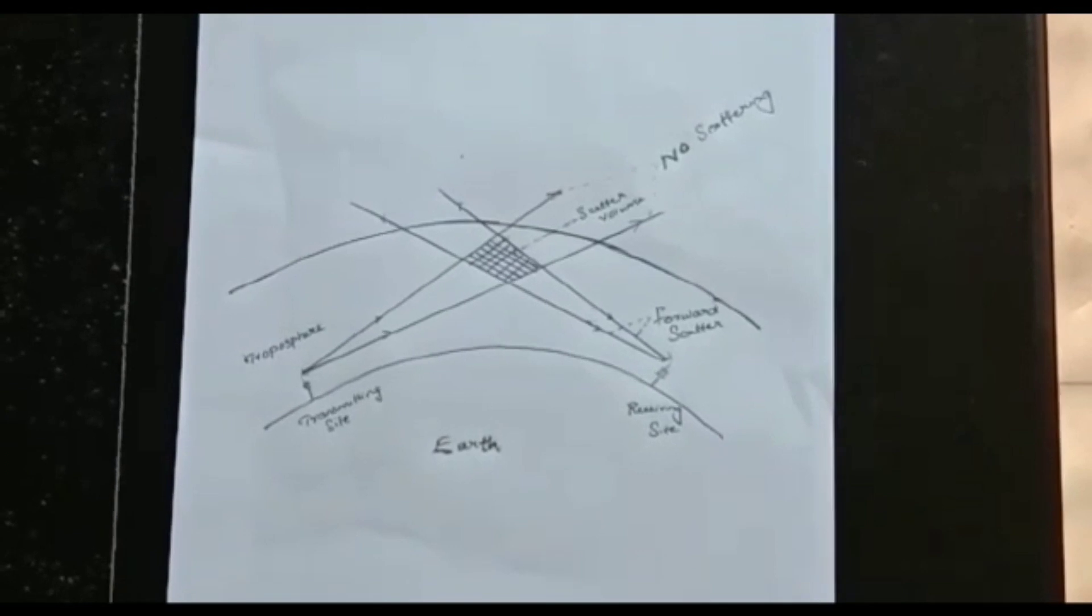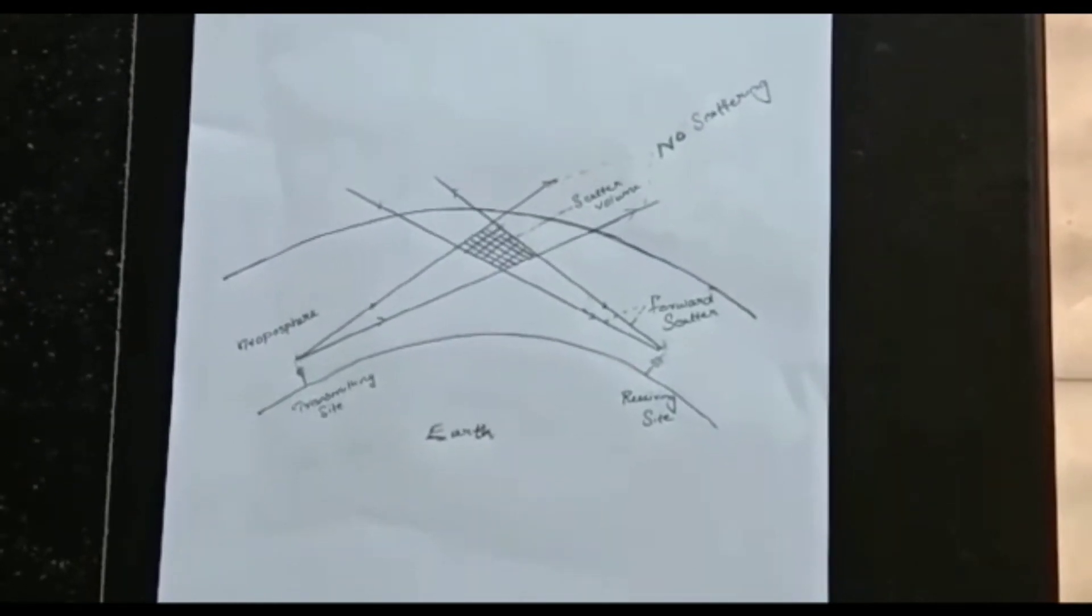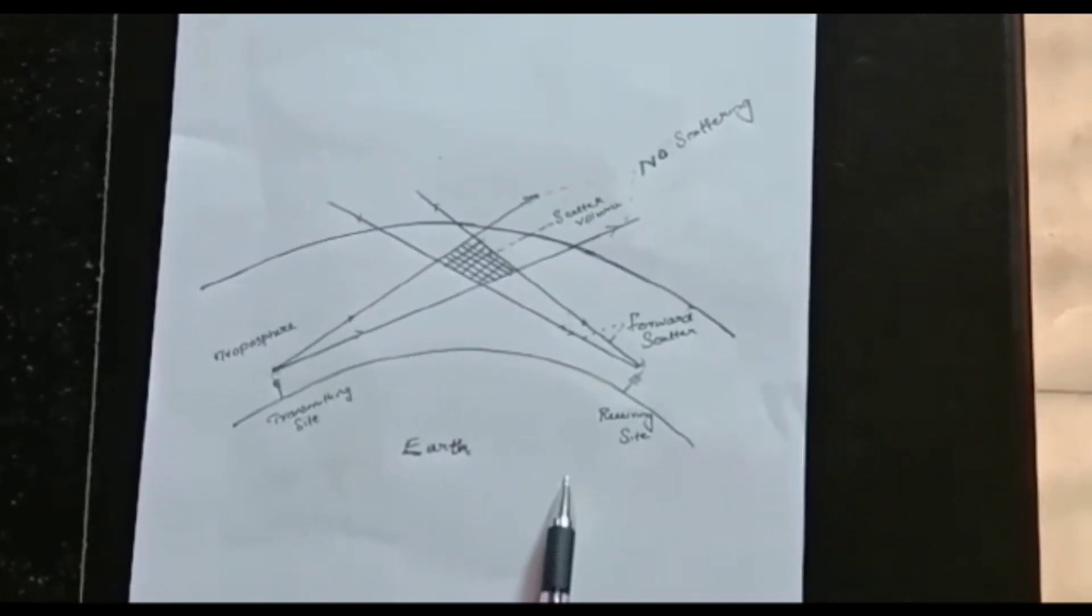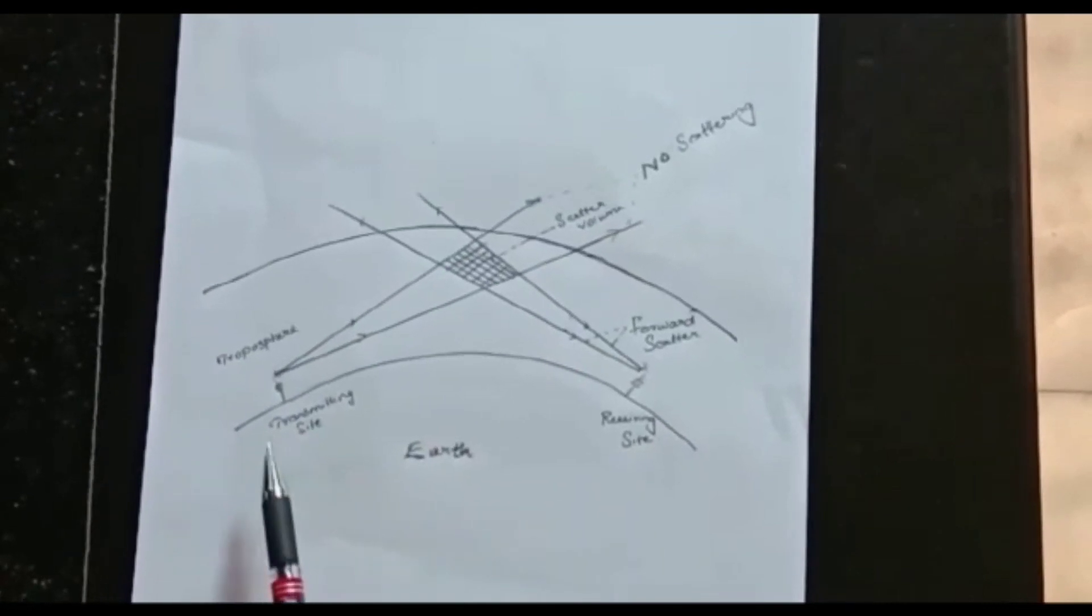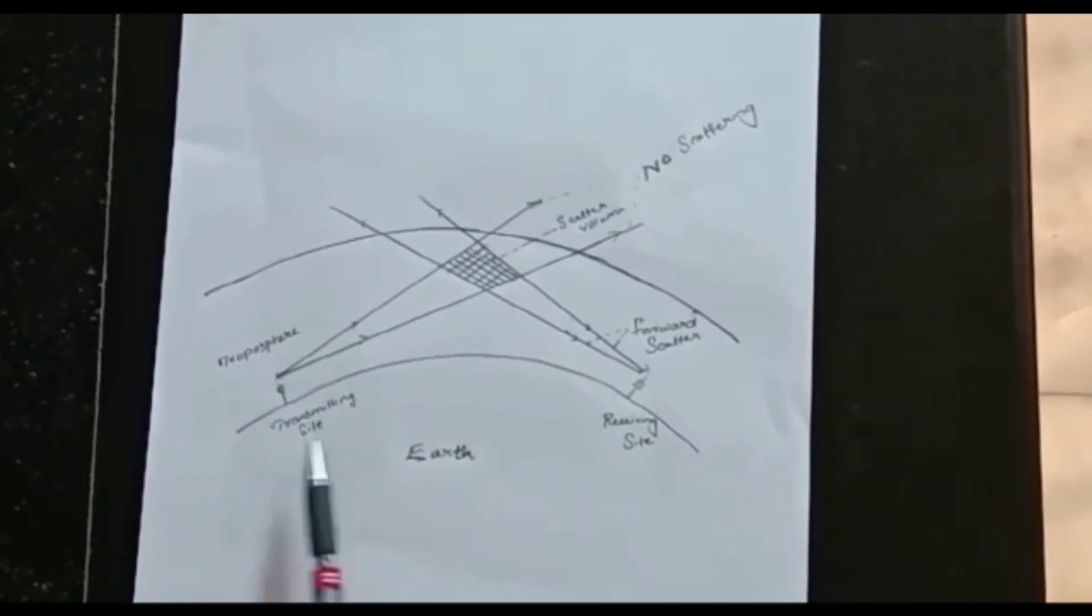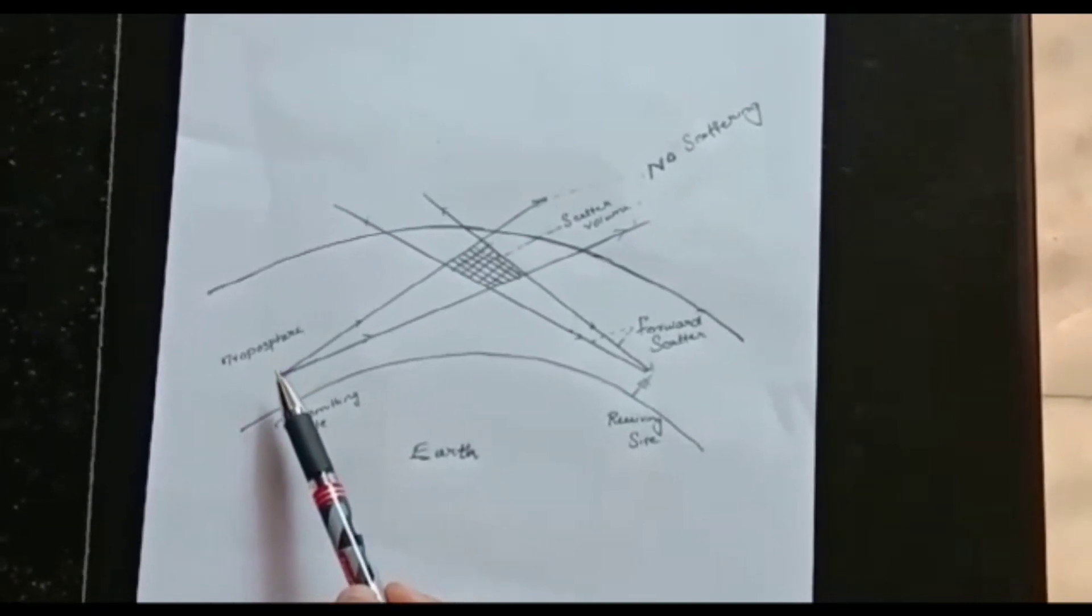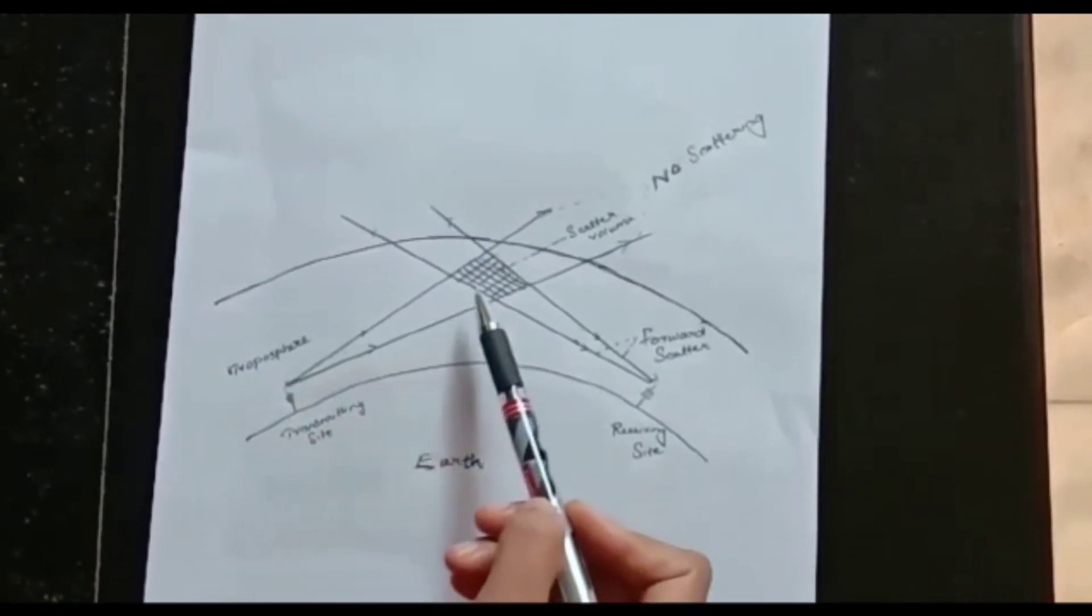Here is the pictorial representation of troposphere scattering propagation. Here we can see this is the earth and this is the troposphere. This we consider as a transmitting antenna and this is the receiving antenna. The transmitting antenna transmits the signals and these signals pass through the troposphere.